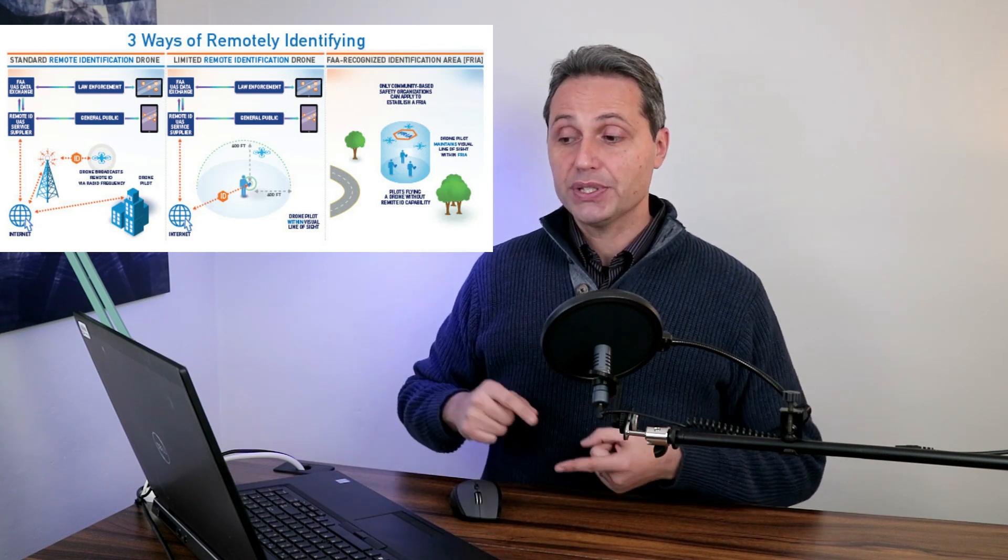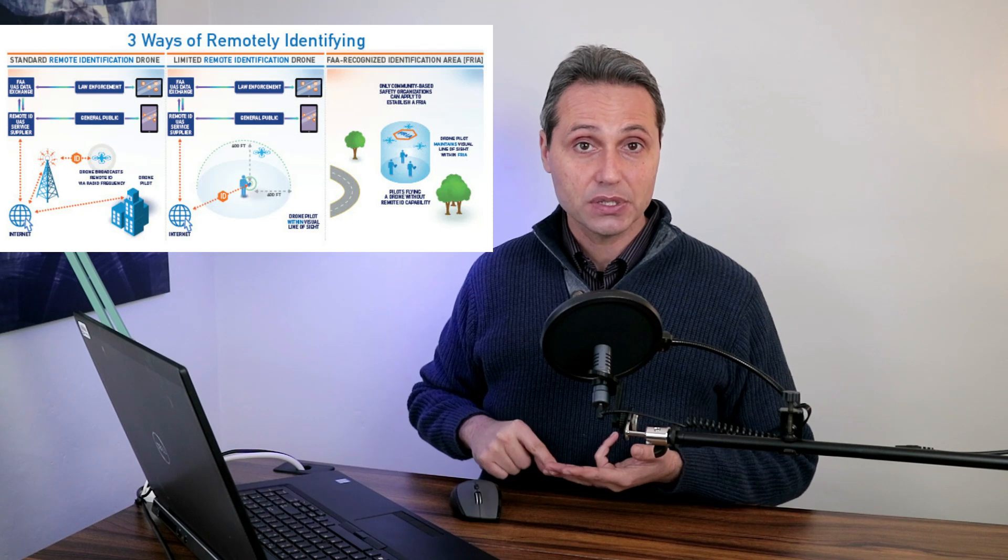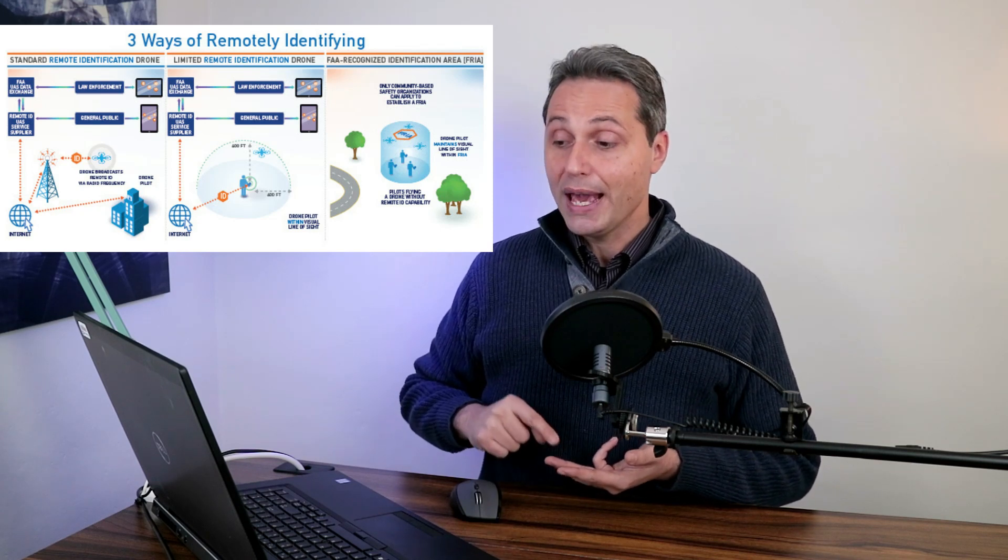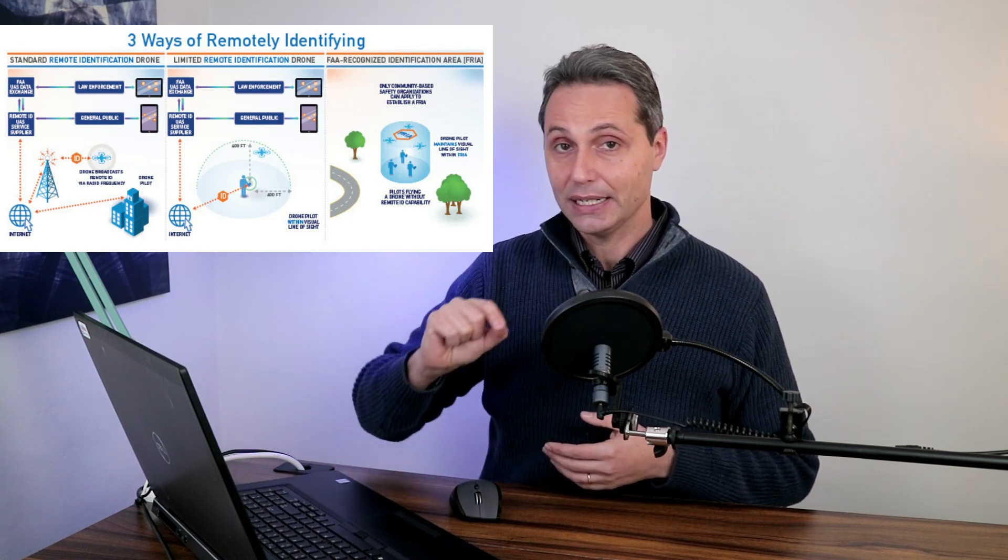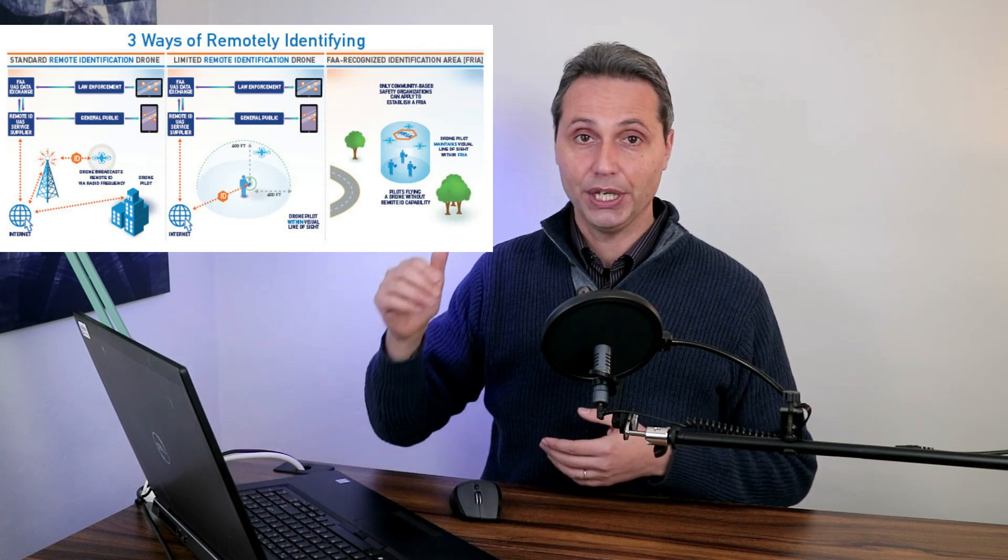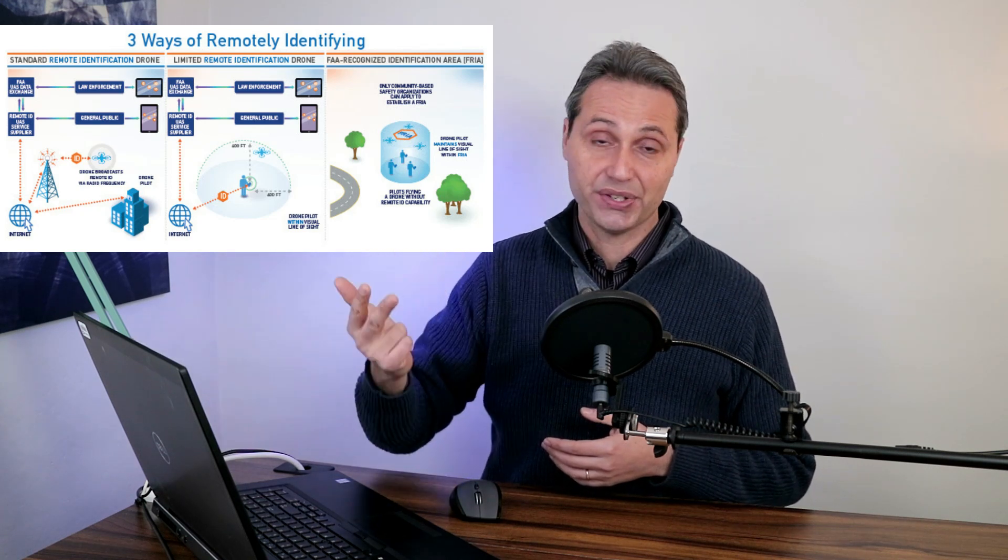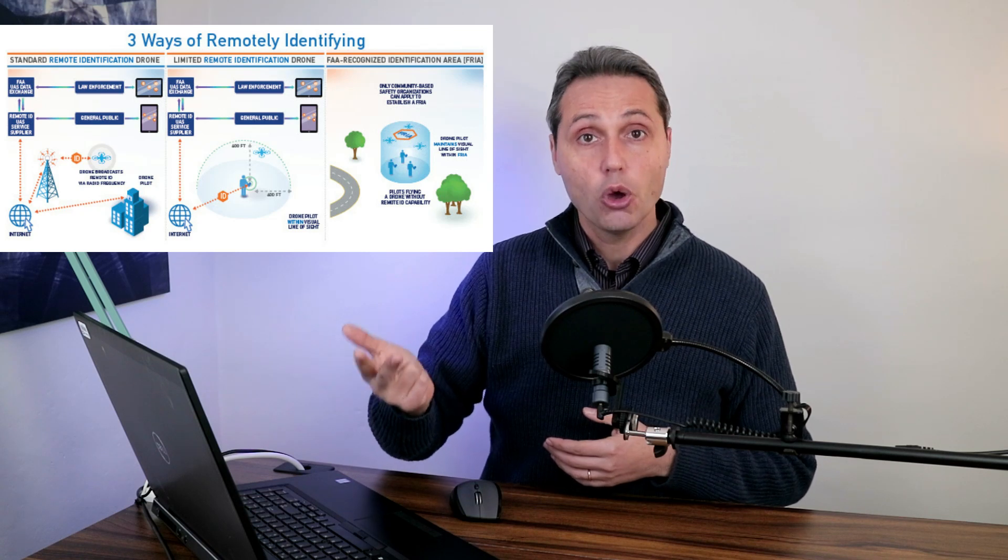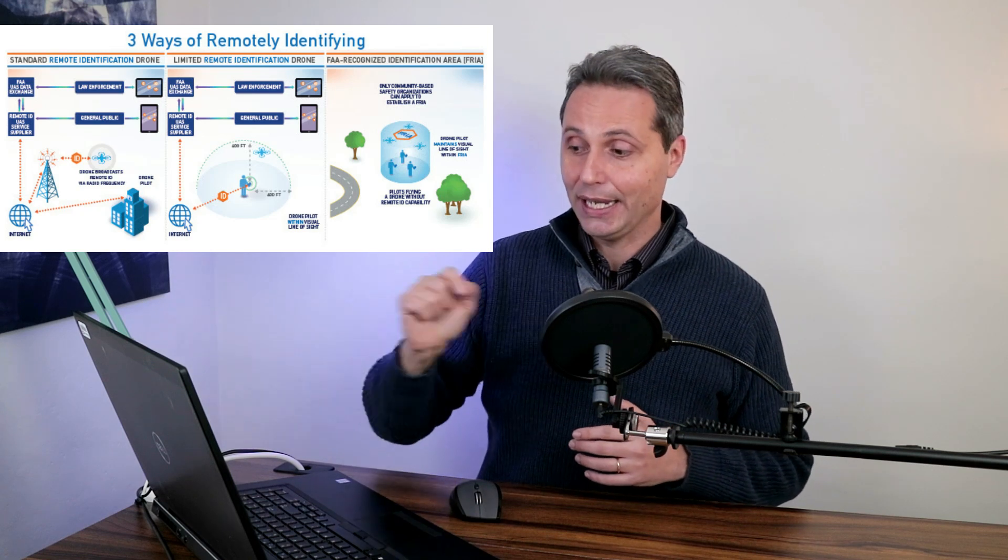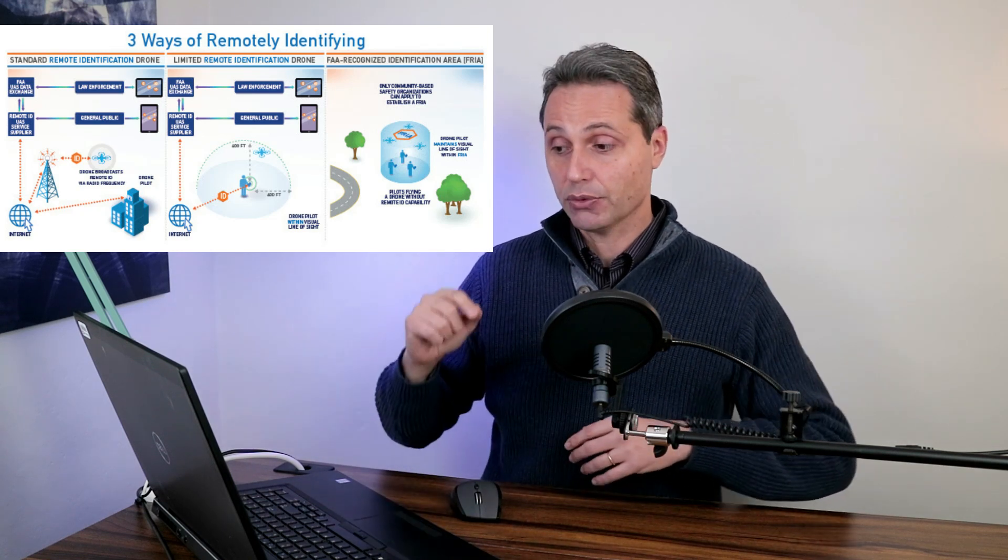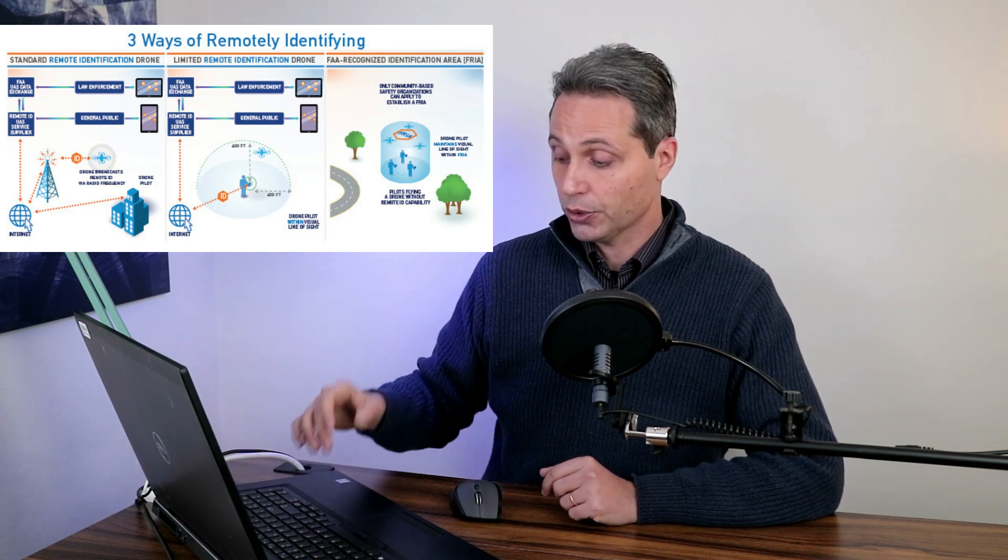And if your system is not standard ID or limited ID, it has either to be less than 0.55 pounds, that means almost 250 grams, or you have to fly only in recognized identification areas. That's it. You can't fly anywhere else. So either your system is standard ID or limited ID, or your system is below 0.55 pounds, or you can't fly at all unless in identified areas. So these recognized identification areas are basically aero clubs where you go and fly your UAV or your amateur build.